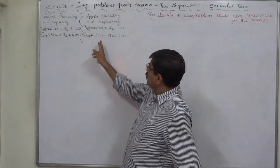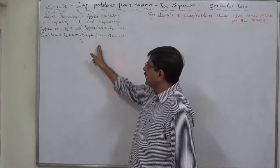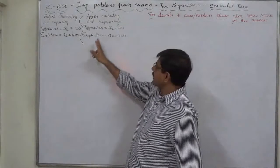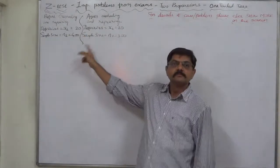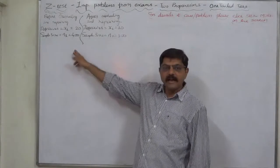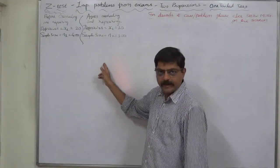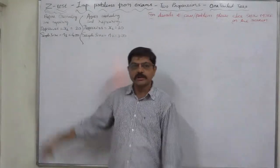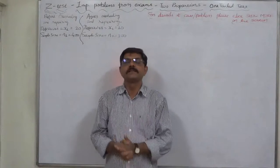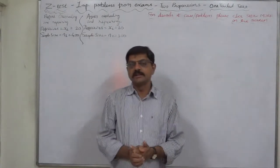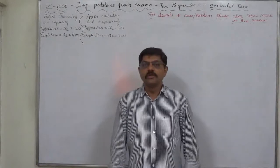The proportion of defective articles after repairing is less than the proportion before repairing — only then can we say the machine has improved. The direction is clear, so this is the case of a one-tail test.